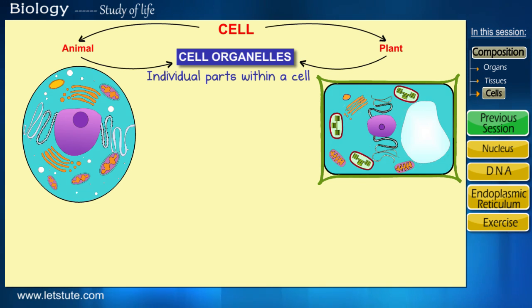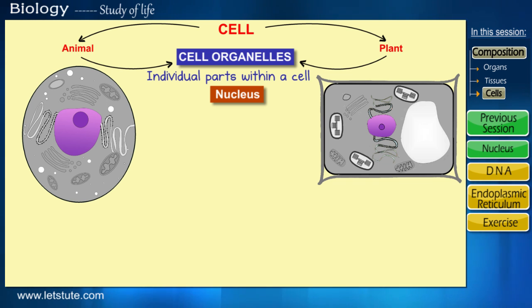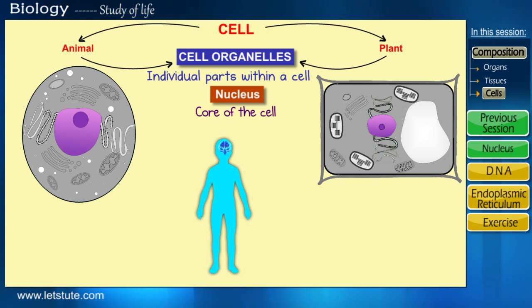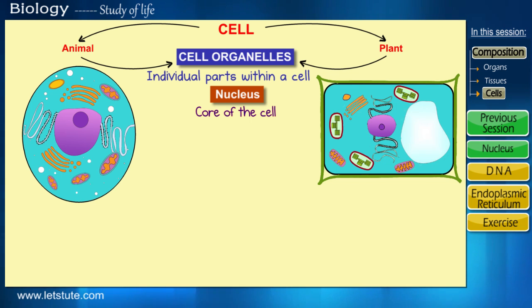Do you see this round-shaped structure present in the centre of the cell? Since it is present in the centre, this organelle is called the nucleus, which means the core of the cell. We all know that the human brain controls the functioning of the body. In a similar way, the nucleus controls the functioning of the cell, so it won't be wrong to regard the nucleus as the brain of the cell.